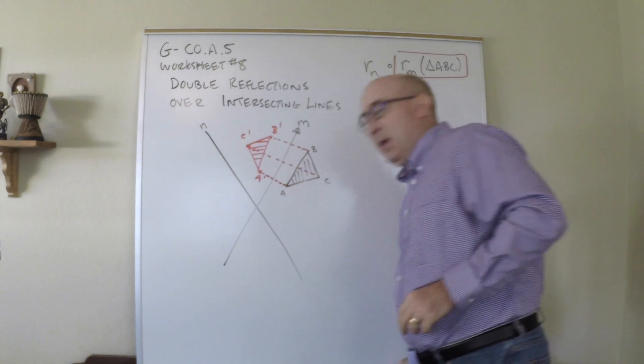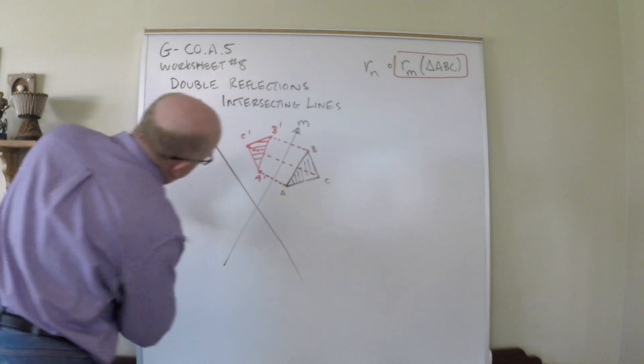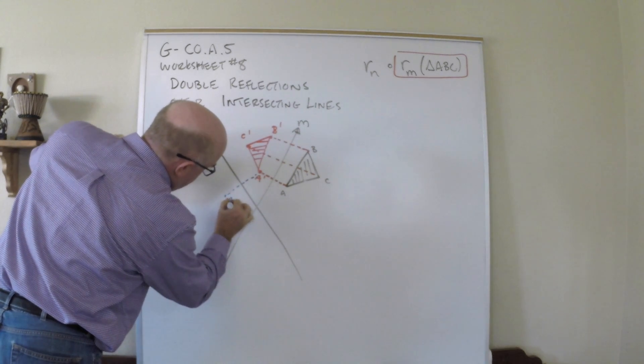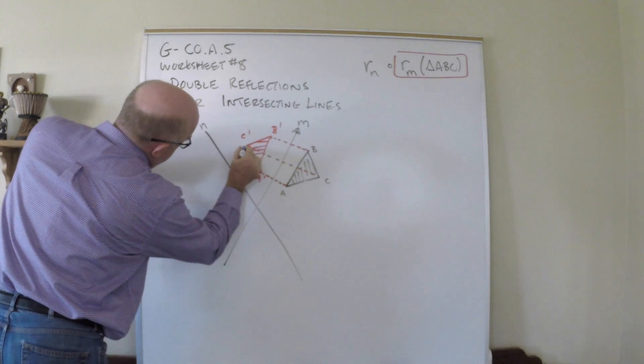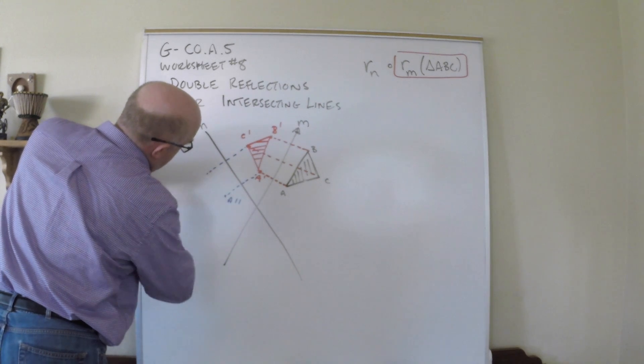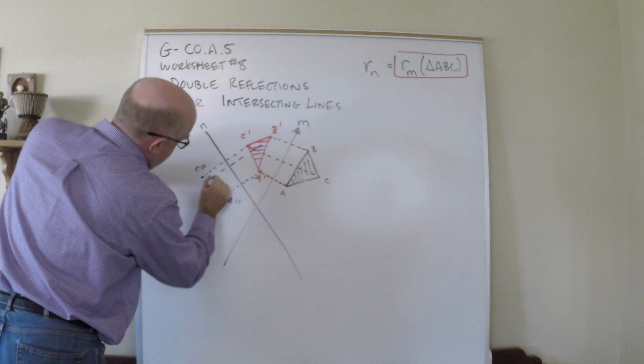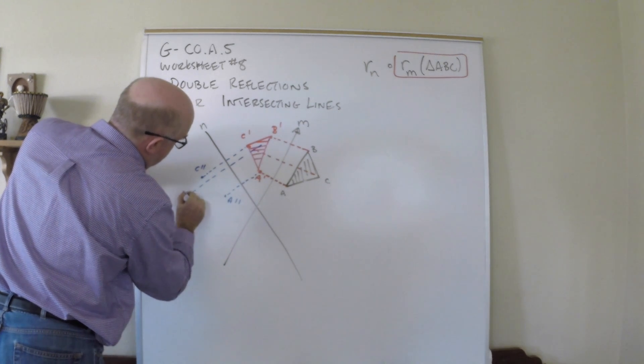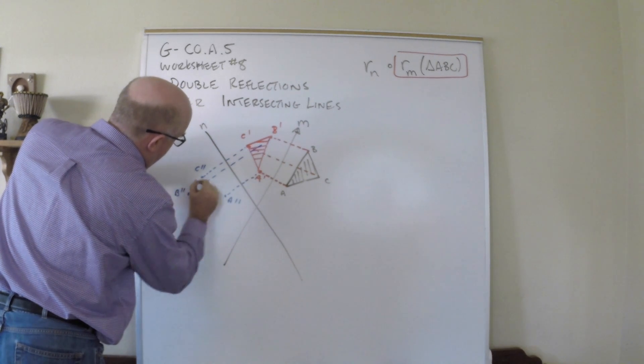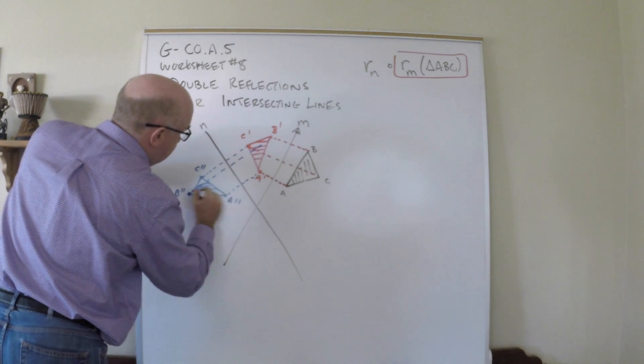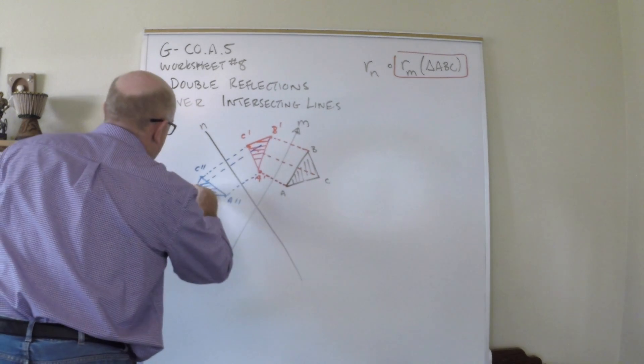We'll now reflect that one more time, doing my best here. There's A double prime. Let's see there be C double prime, and somewhere out here will be B double prime. Something like this.